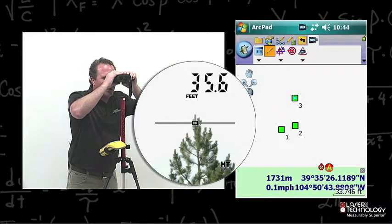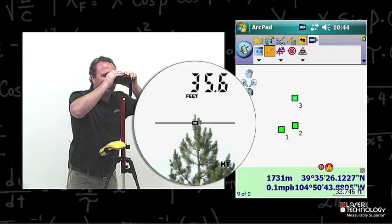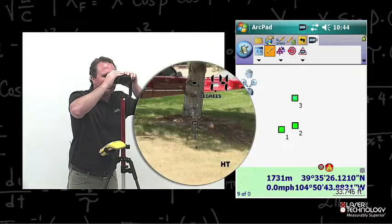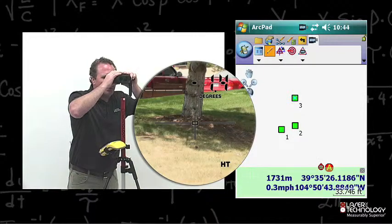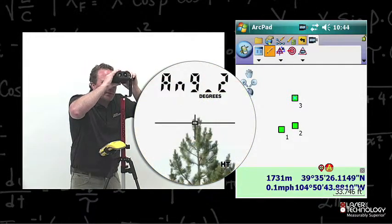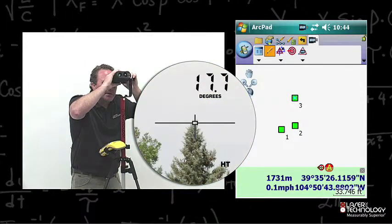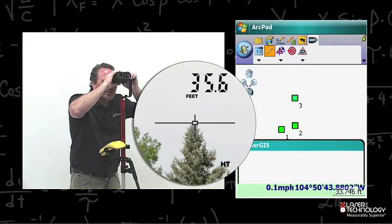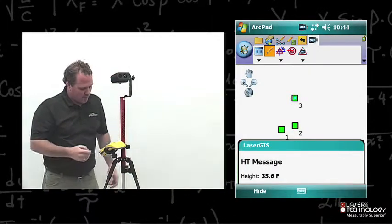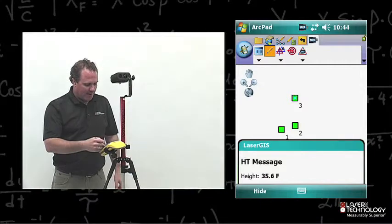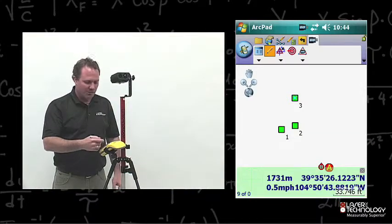It prompts me for angle one. I'm going to do a base angle. It prompts me for angle number two to a top angle, and a height value is shown. LaserGIS actually notifies me if a height value is populated.